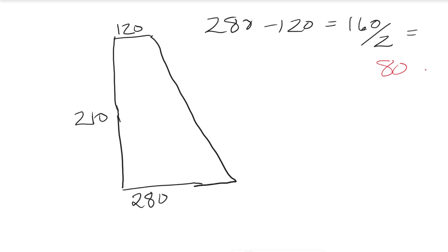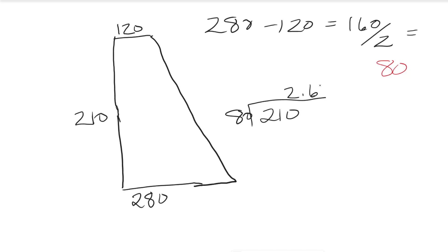So we have 80 sets of increases to work for this sleeve, working from the cuff to the upper arm, and we have 210 rows in which to work them. We take 210 divided by 80 and we get 2.625. We don't really care about the 0.625 — we just know we have 2, and we add 1 to it to get 3.